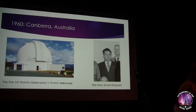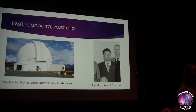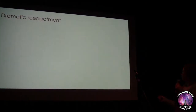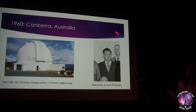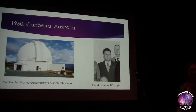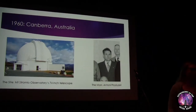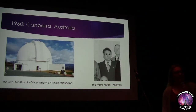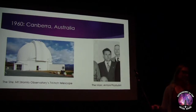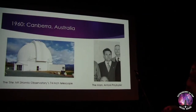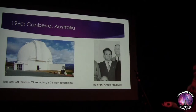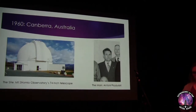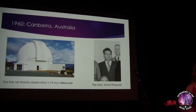To set the scene: in 1960 we're in Canberra, Australia. This man here is Antony Chbilsky, a Polish astronomer. He travels to the Mount Stromlo Observatory with its 74-inch telescope and starts observing stars.